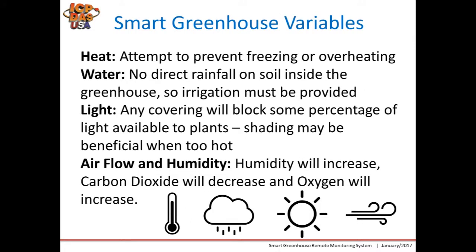A greenhouse can control different variables including heat, water, light, airflow, and humidity. For heat, the goal is to prevent freezing or overheating — for example, tomatoes and other warm-weather plants assume no growth below 50°F or above 86°F. For water, there is no direct rainfall on soil inside the greenhouse, so irrigation must be provided; water volume and timing can be controlled to optimize growth. For light, any covering will block some percentage of light, and particular wavelengths need to be available to plants.